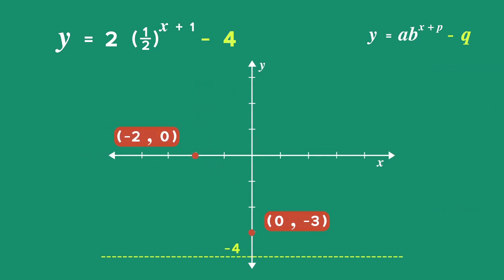Next, we sketch the exponential graph with a decreasing shape. Notice that the exponential curve passes through the x and y-intercept and then gets closer and closer to the asymptote but never intersects or crosses it.